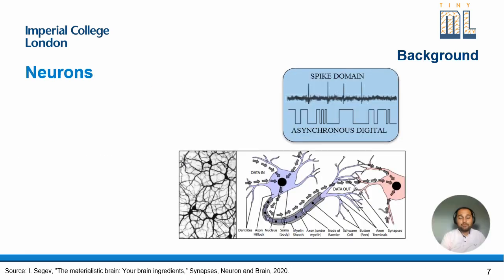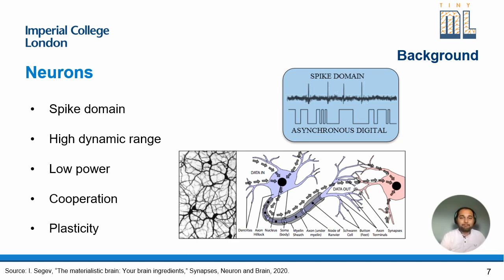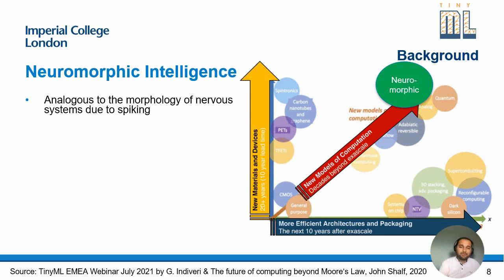This motivated us to take inspiration from the smartest learning tool in our body: the brain. The brain has neurons as its main learning component. Neurons operate in the spike domain, have a high dynamic range, consume low power, and show cooperation — plasticity to learn new things. This has formed the basis of neuromorphic intelligence, leading the way for new models of computation. Ever since the exascale, we've been looking at more efficient architectures and packaging on one hand, and new materials and devices on the other.